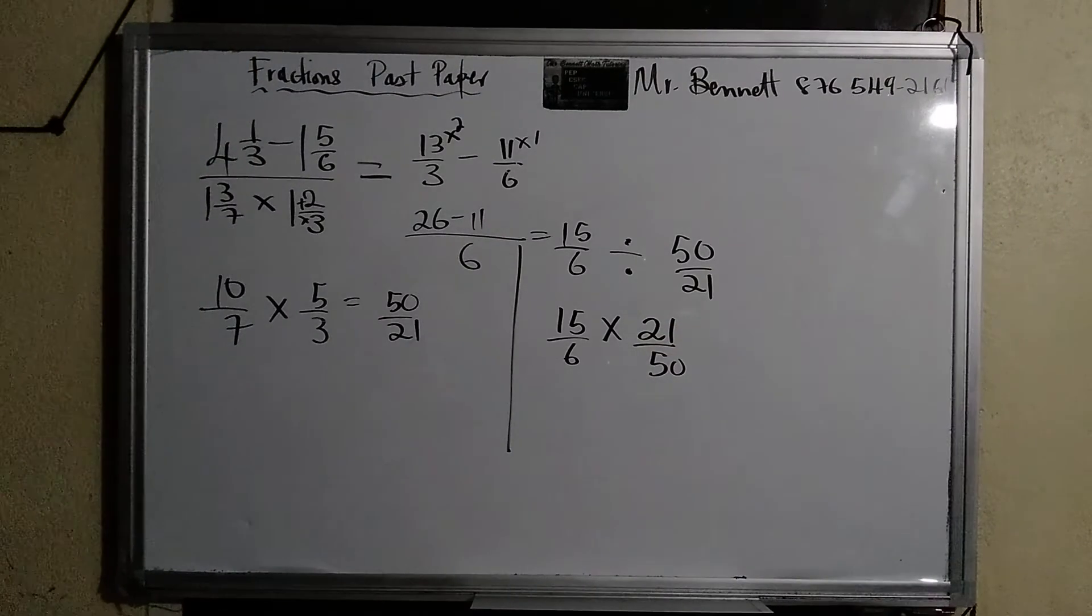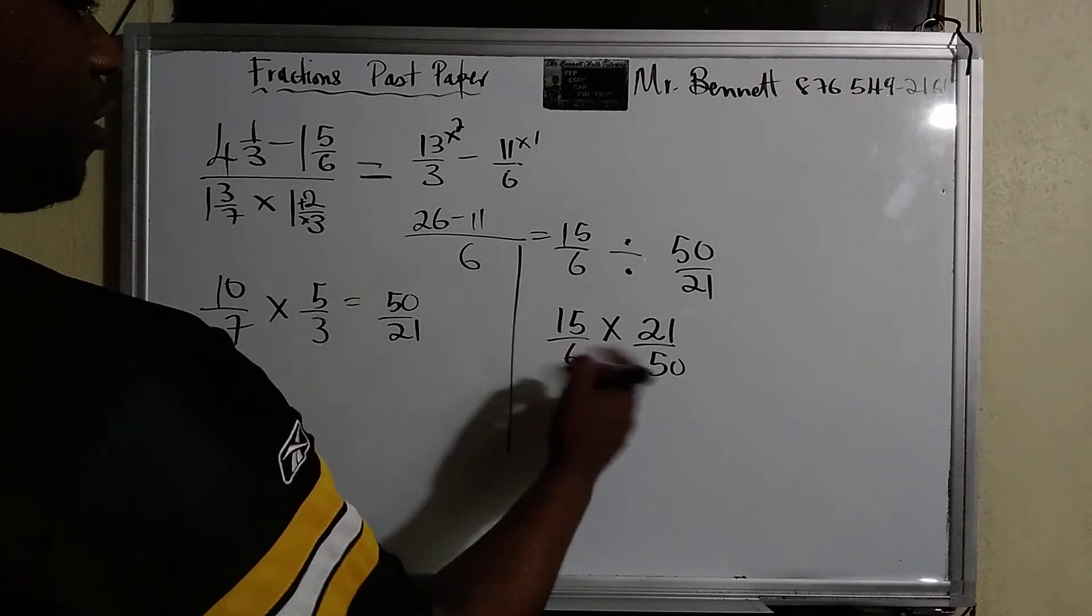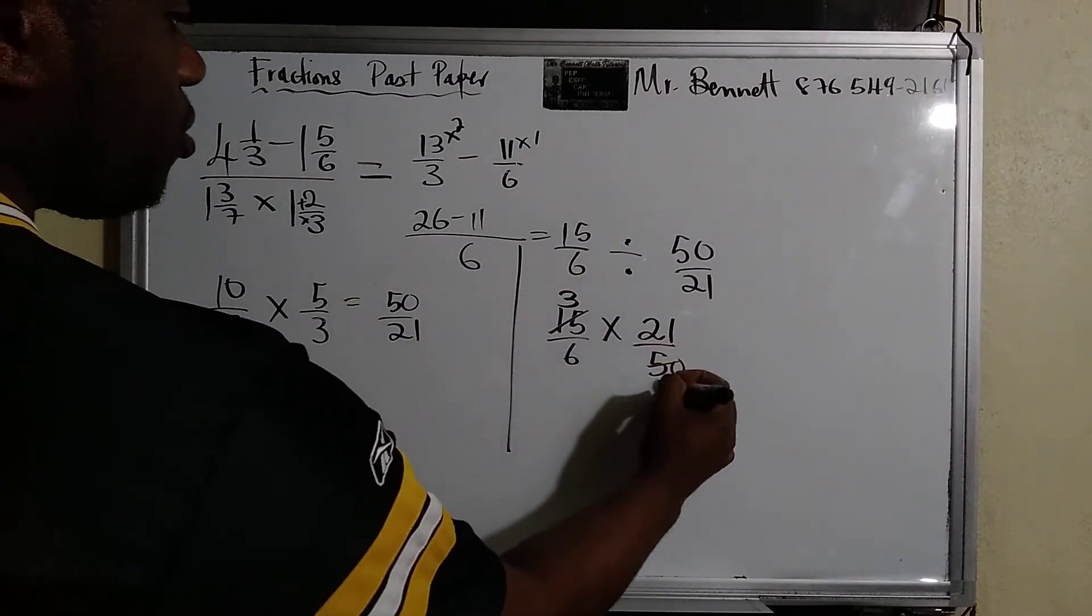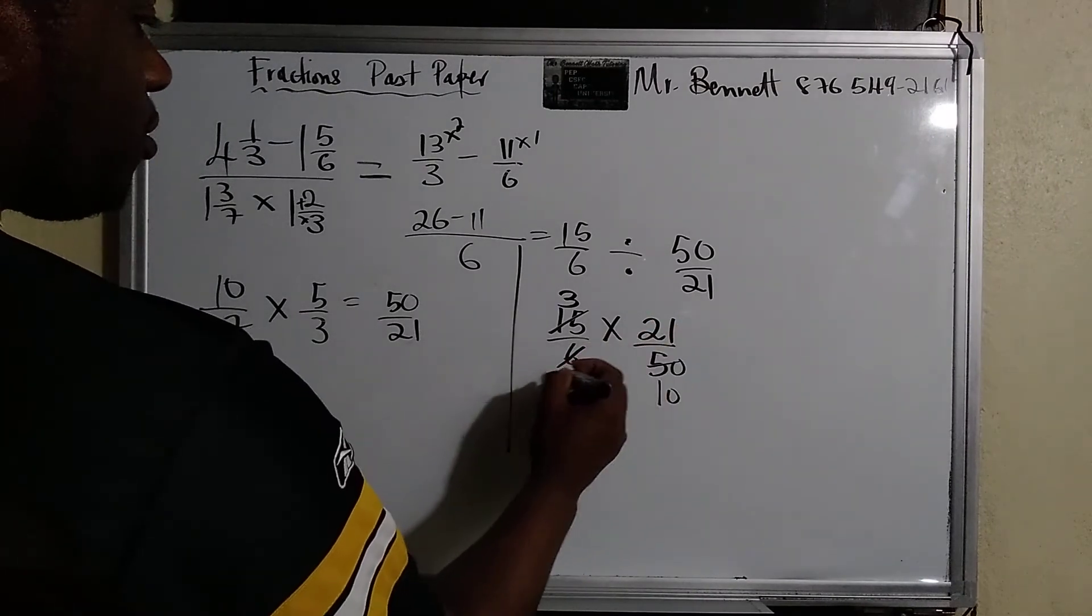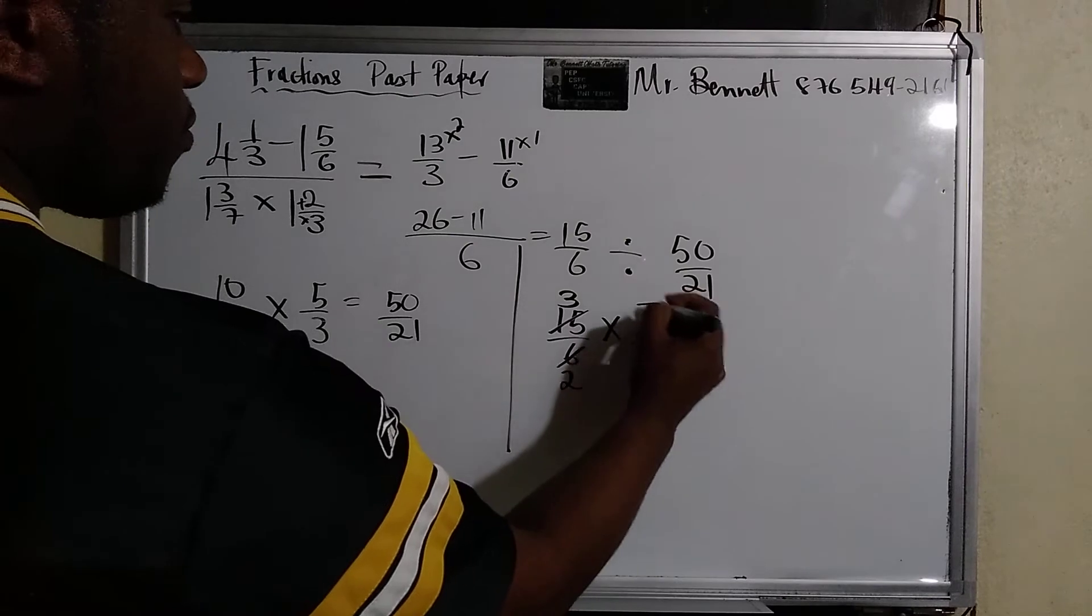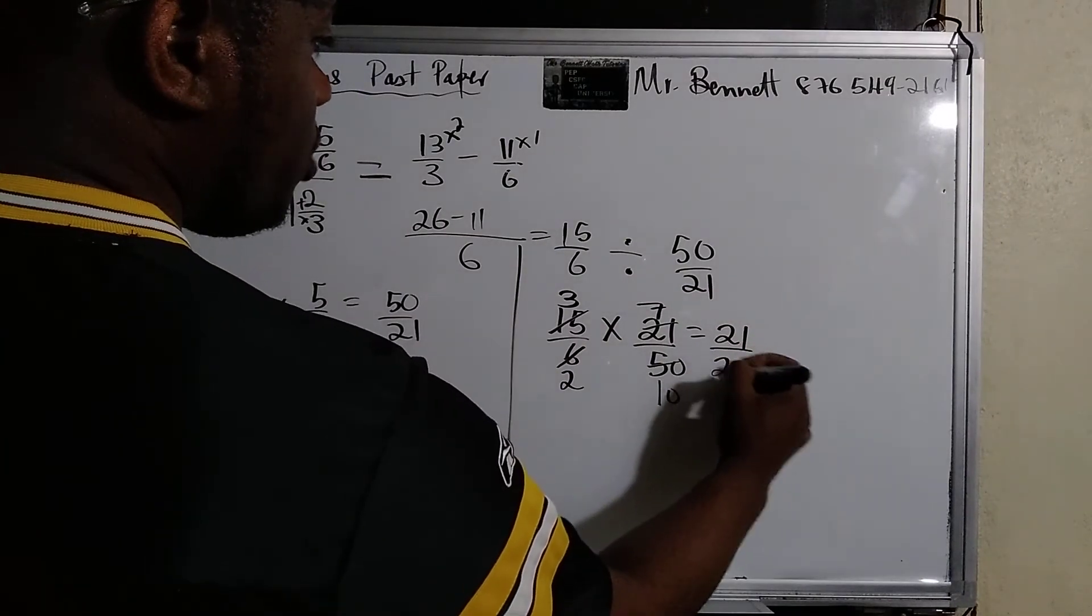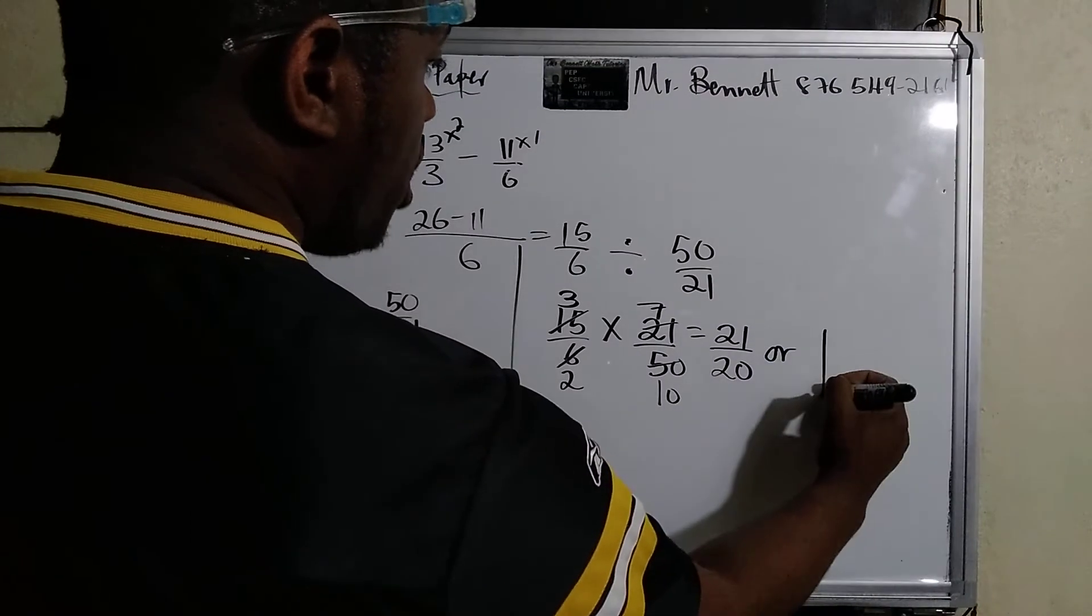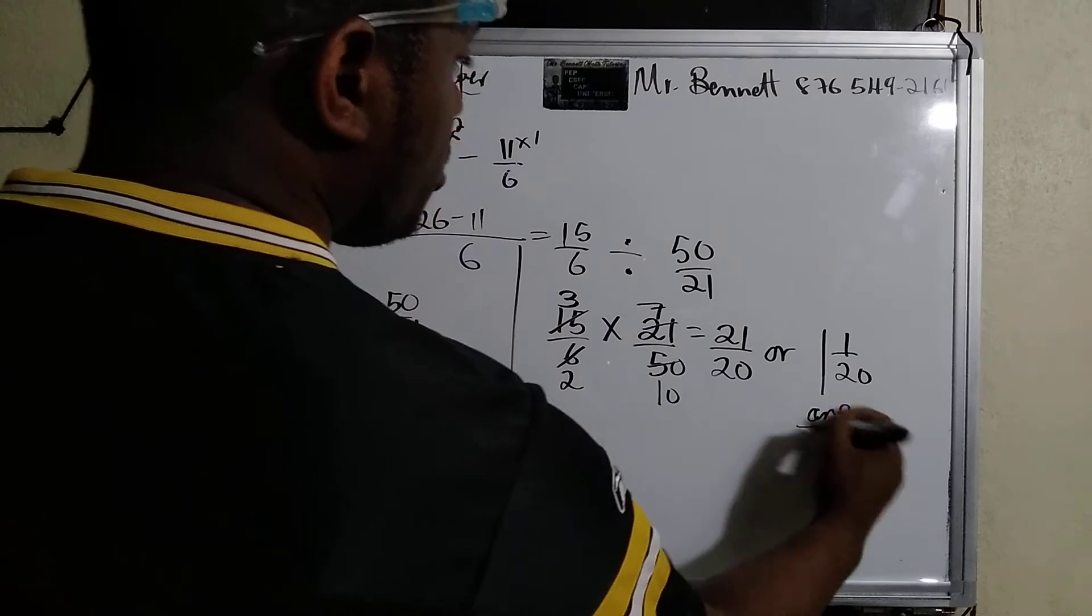And then now we can cancel. We can say five can go into both of these, so it will be three. This will be ten. Alright, three can go into six two times. I need two seven, three to seven is twenty-one, two times ten is twenty. Can I leave that? This R one. And we know one over twenty-one. So that will be our answer.